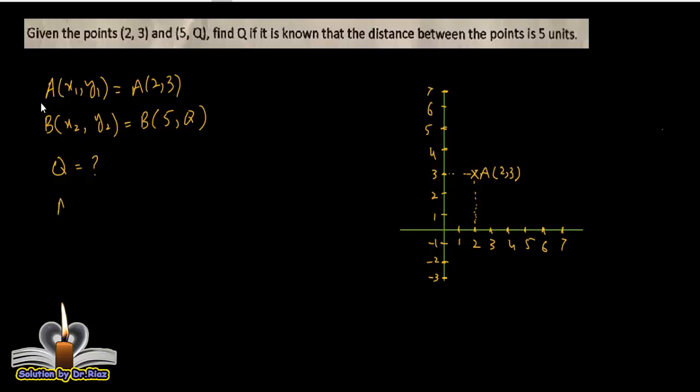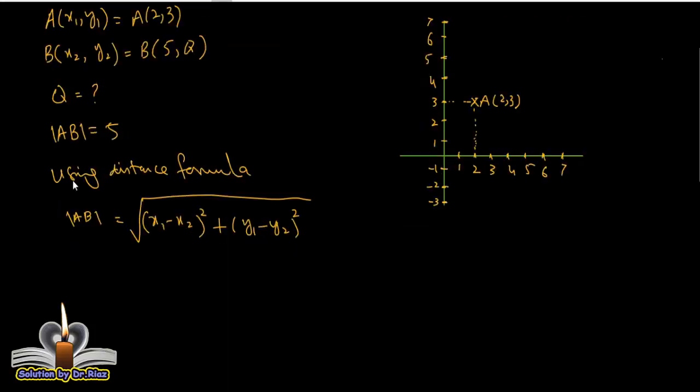It is also given that the distance between two points is equal to 5. Using distance formula, AB is equal to square root of (x₁ minus x₂) whole square plus (y₁ minus y₂) whole square.